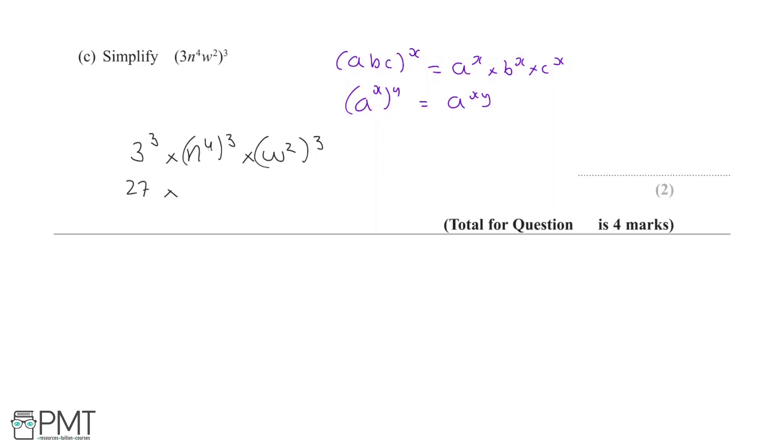For this, we're going to apply this rule, which is going to be 4 times 3, which is 12. So n¹² times w, 2 times 3 is 6, so it's going to be w⁶.